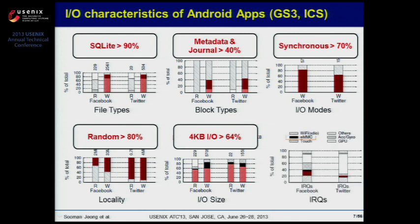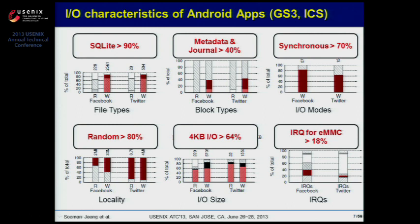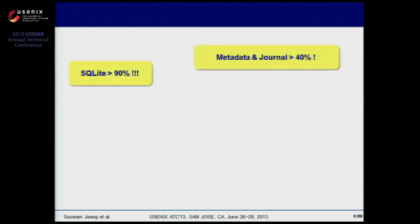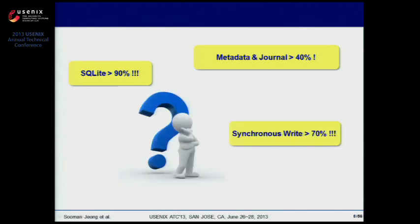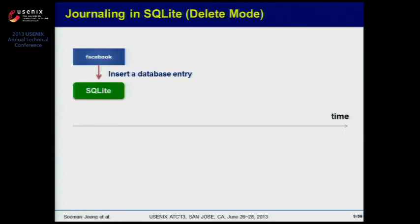Lastly, this is the distribution of interrupt requests that occurred when the two applications were in action. Interrupt requests to handle eMMC take 18%. Then, why do these things happen in smartphones? We tried to find the answer by analyzing the interaction between SQLite and EXT4. Let's see how SQLite handles an insert operation.